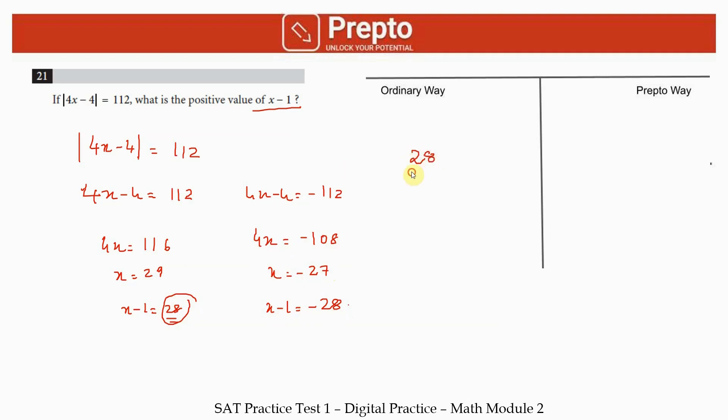In the Prepto way, we understand that 4 is positive and present in both terms, so I can remove the 4 common. I can write this as 4 times the modulus of x minus 1 equals 112, which means modulus of x minus 1 equals 28. That's it—this is the positive value of x minus 1. The hint is here: why are they asking us for x minus 1 and not x minus 2 or x minus 3? They're asking for x minus 1 because of this—because this is 4 times x minus 1.